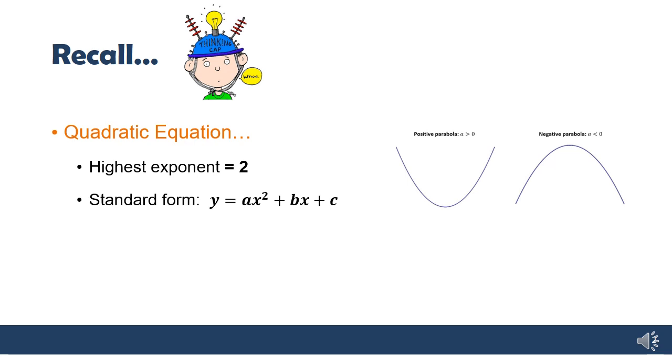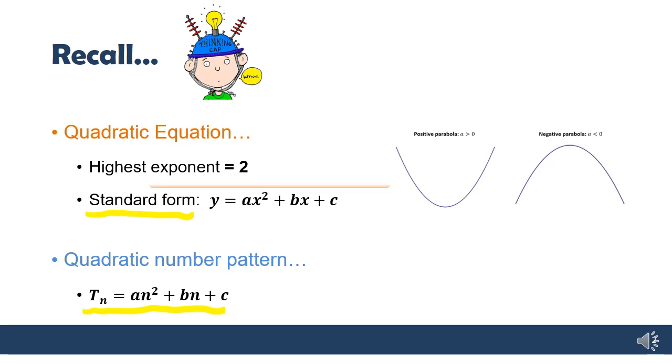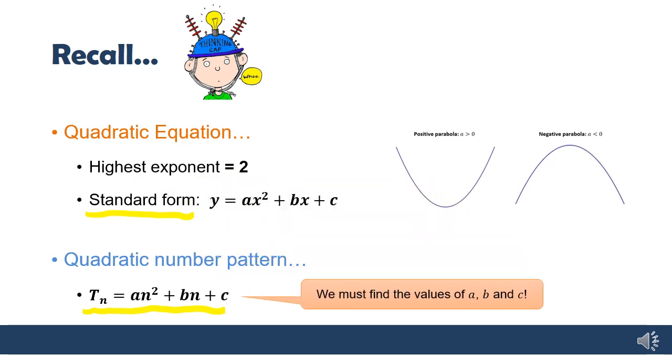But now focusing on quadratic number patterns. Now in a quadratic number pattern, the general rule Tn is going to be an squared plus bn plus c. So it follows with the standard form that we talked about up here. And as you might have guessed, just like before in the linear patterns, we had to work out what b and c were. Now we have to work out the values of a, b, and c.